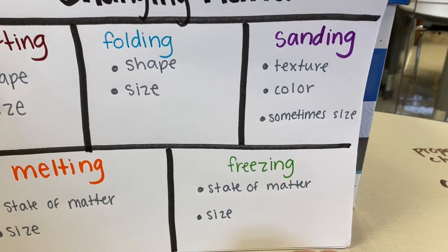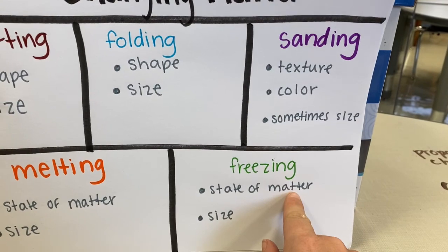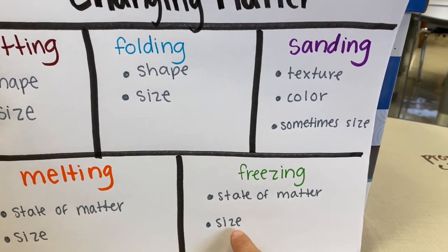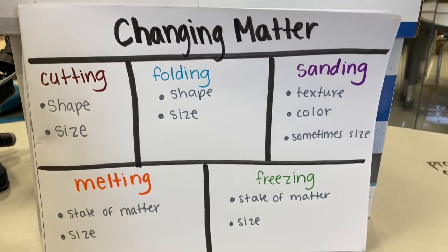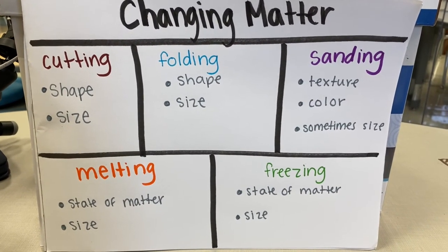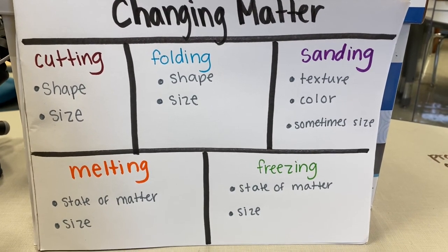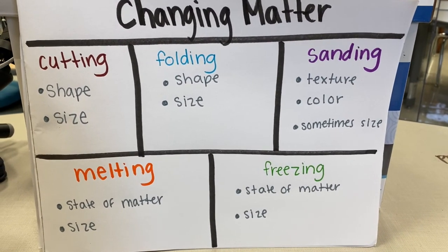And finally, freezing matter by making it cooler changes its state of matter from a liquid to a solid, and it changes its size. So now you guys are going to do an activity, and you're going to change matter by folding it, cutting it, melting it, and freezing it at your own house.